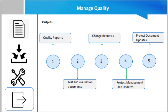Project management plan updates: sometimes rather than conforming the results to the plan, you may find that the plan was unrealistic, in which case you may need to modify the agreed-upon approach to managing quality based on actual results. This includes the scope baseline, schedule baseline, cost baseline, and specific quality management activities.